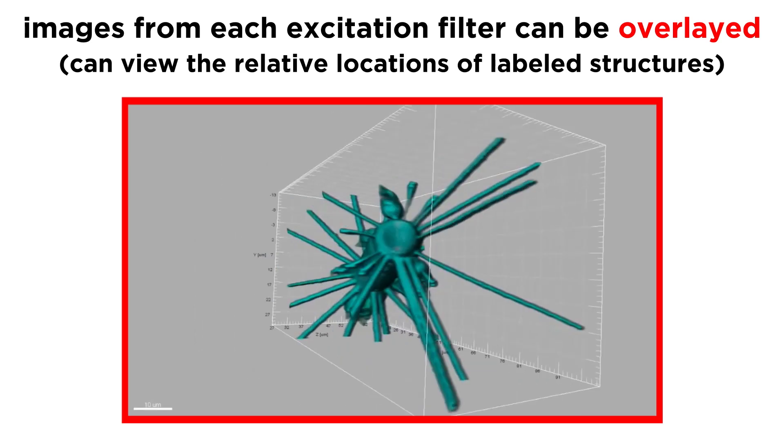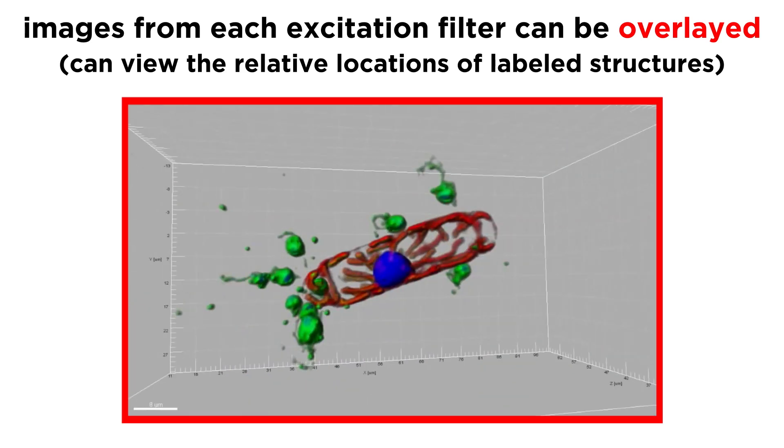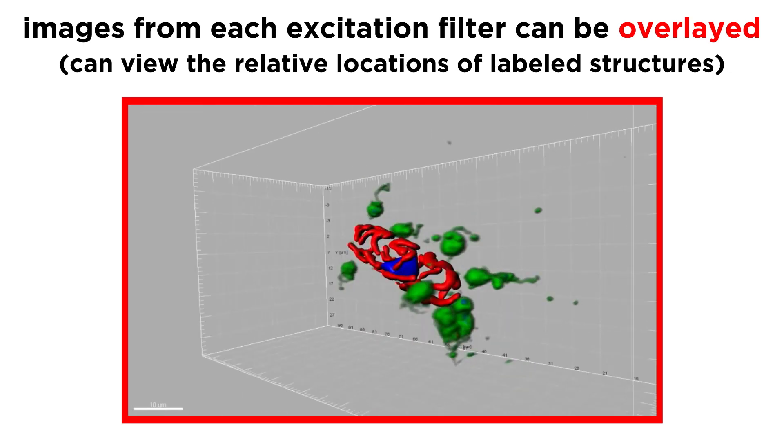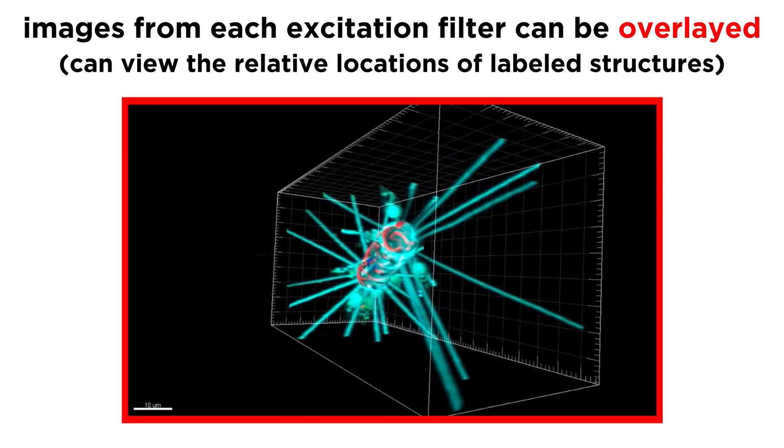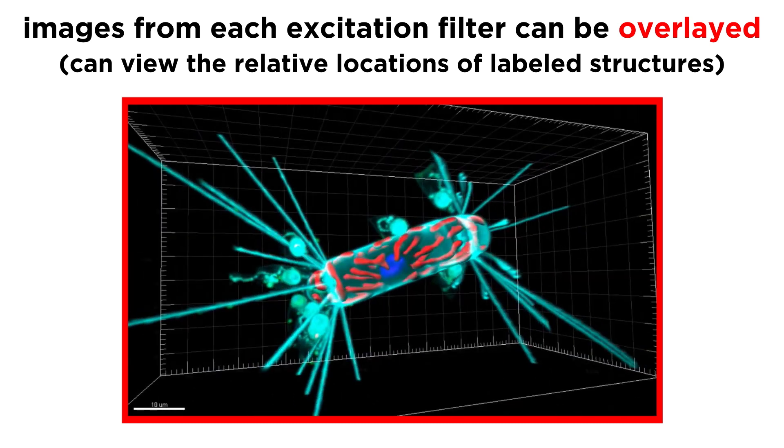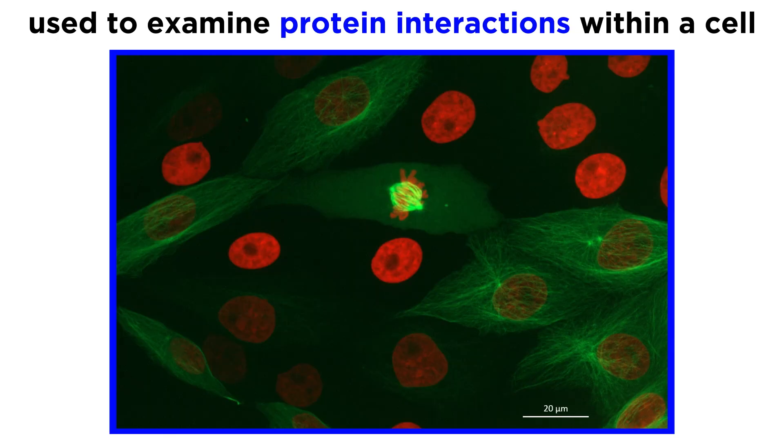After images are taken with each excitation filter relevant to the labeled sample, one can save each image separately or overlay images on the computer to view the relative locations of the labeled structures. This technique is commonly used to explore the interactions of proteins with other proteins or structures in a cell.